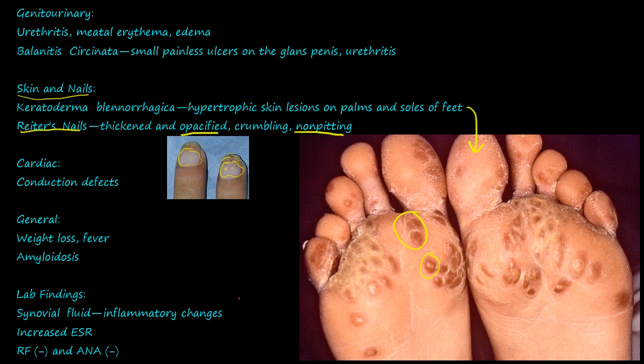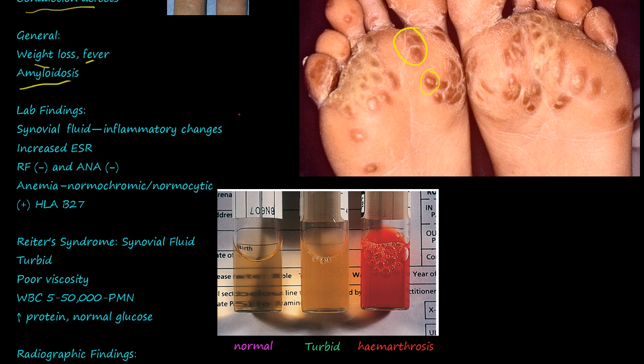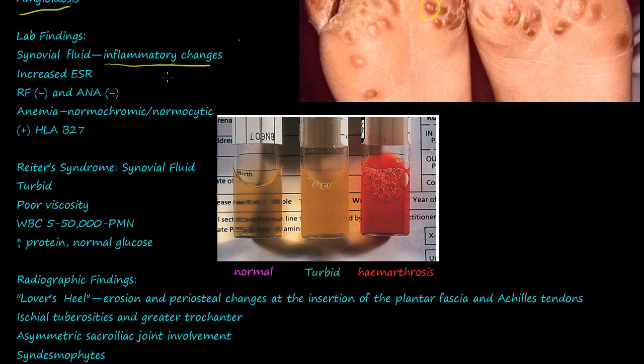Heart involvement includes conduction defects. There is also general weight loss, fever, and amyloidosis. Lab findings include synovial fluid changes, increased ESR (erythrocyte sedimentation rate), RF factor negative, ANA negative, normochromic normocytic anemia, and a positive HLA-B27 — as in most seronegative spondyloarthropathies.